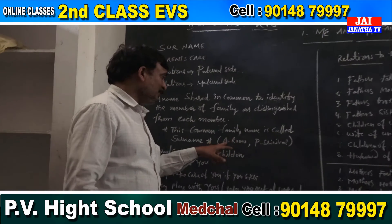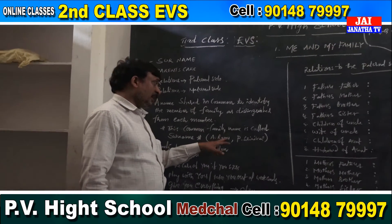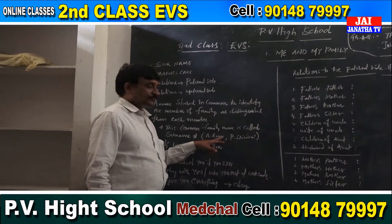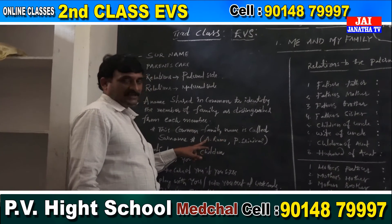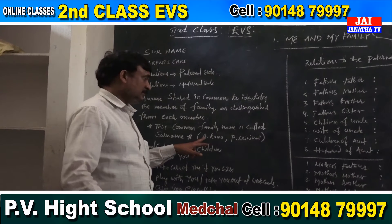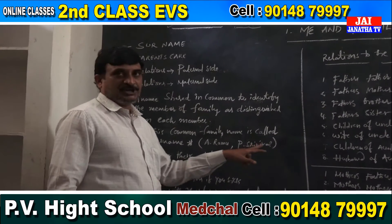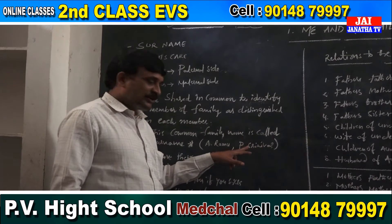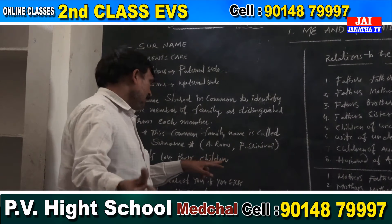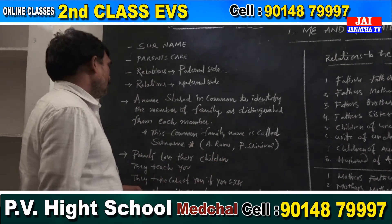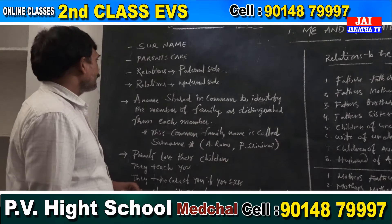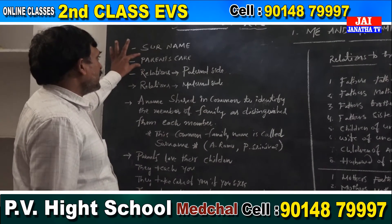So this common family name is called surname. For example, A. Ramu — the A before the name is the surname initial. Each child knows what that letter stands for. So that is the surname. Now come to the next point.